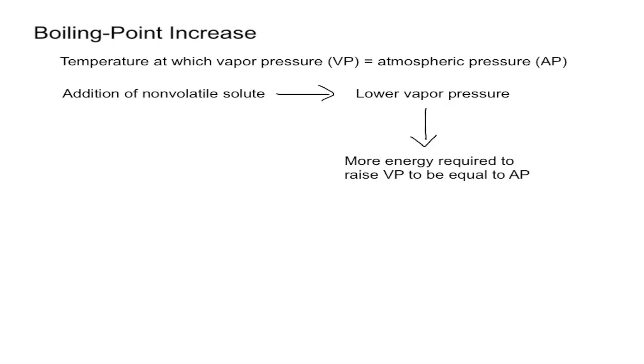First, to understand what the boiling point increase means we need to know what a boiling point is. Well, the boiling point is the temperature at which vapor pressure is equal to atmospheric pressure. We'll be representing the vapor pressure with VP and the atmospheric pressure with AP.